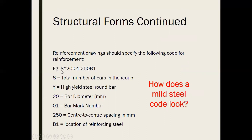Breaking down the code: 8 is the total number of bars in the group, Y means high tensile, 20 is the bar diameter, 01 is the bar mark number, 250 is the center-to-center spacing in millimeters, and the last part indicates the location of steel reinforcement. Also look up how this code changes for mild steel or other types of steel.